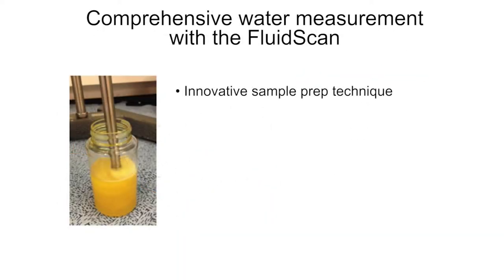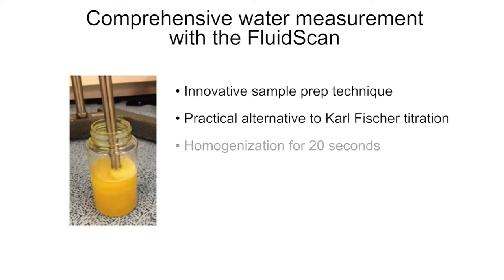An innovative patent-pending technique for sample preparation for the FluidScan makes it a practical alternative to Karl Fischer titration. The sample is homogenized for 20 seconds and let sit for one minute. Homogenization is used because free water is not uniformly distributed in the oil sample but shows as discrete droplets of water. High-speed homogenization breaks up these droplets and creates a uniform distribution of water in the oil.